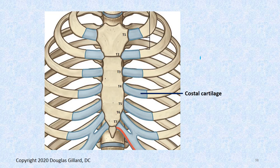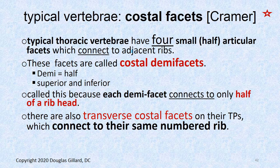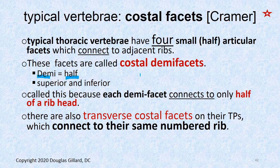We just finished talking about costal margin last time, and we started talking a little bit about ribs — so that's where we are. There are costal facets, which makes the thoracic spine quite unique. A typical thoracic vertebra has four small half-circle facets on them called costal facets or costal demi-facets. The word 'demi' means half. There are four of them — two on each side — and these facets have mates on the rib heads.